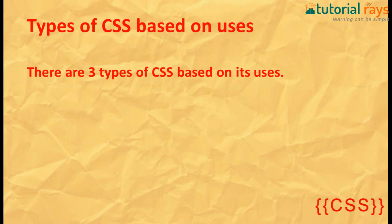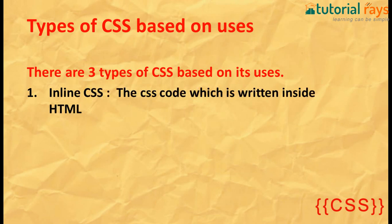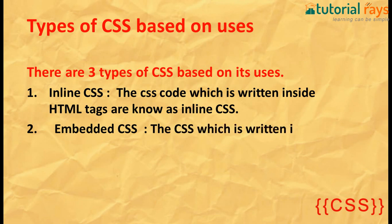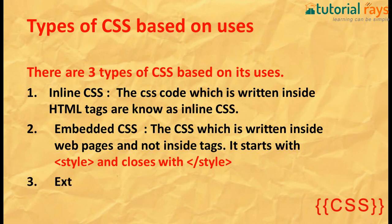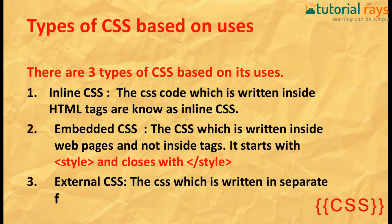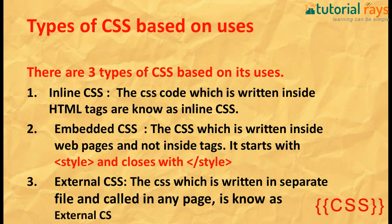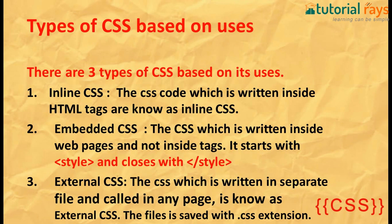Now, types of CSS based on usage. The first one is inline CSS — the CSS code written inside HTML tags is known as inline CSS. The second one is embedded CSS — CSS written inside a web page but not inside a tag, starting with a style tag and closing with a style tag. The third is external CSS — CSS written in a separate file and called in any page, saved with a .css extension. I will show you all three types in the next video, so stay connected. Thanks for watching.